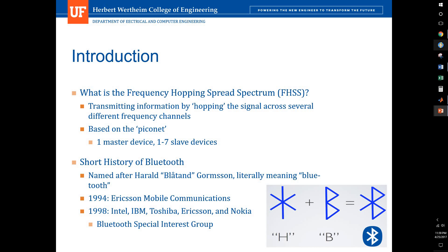So what is the frequency hopping spread spectrum? Basically, it's a technique where you hop signals across several different frequency channels. This is all based on a small network called a Piconet — Pico meaning small — where you have a single master device and one to seven slave devices. This is important because you can have multiple Piconets in close proximity, in the same room, and they shouldn't interfere with each other because of this ability for the signal to hop.